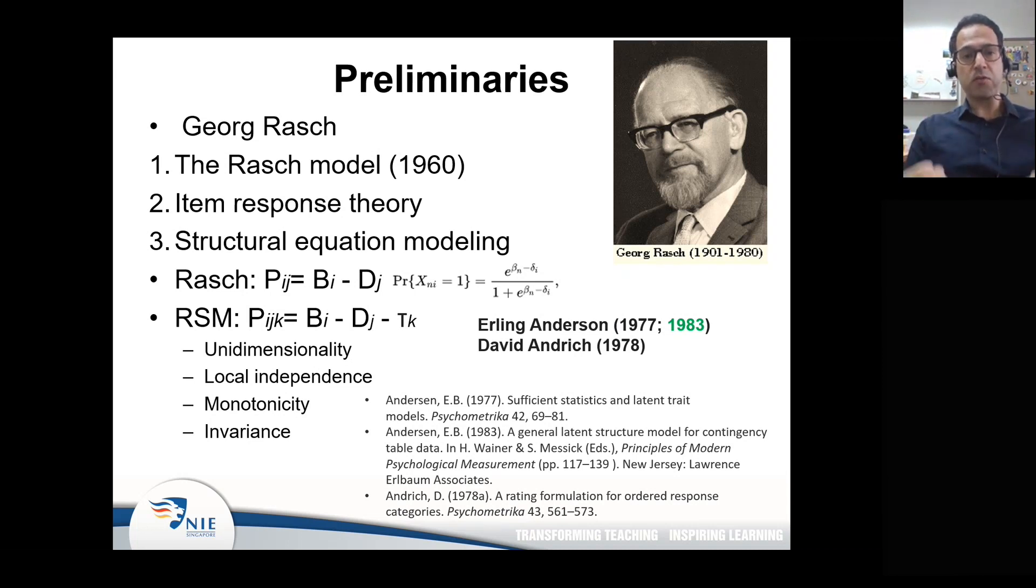In the model we're going to cover today, which goes by the name of the Rasch rating scale model, we have an additional parameter called the tau parameter. In this case, the probability I mentioned before is governed by those first two parameters, item difficulty and person ability, but also the difficulty of the steps or the threshold difficulty or threshold location.